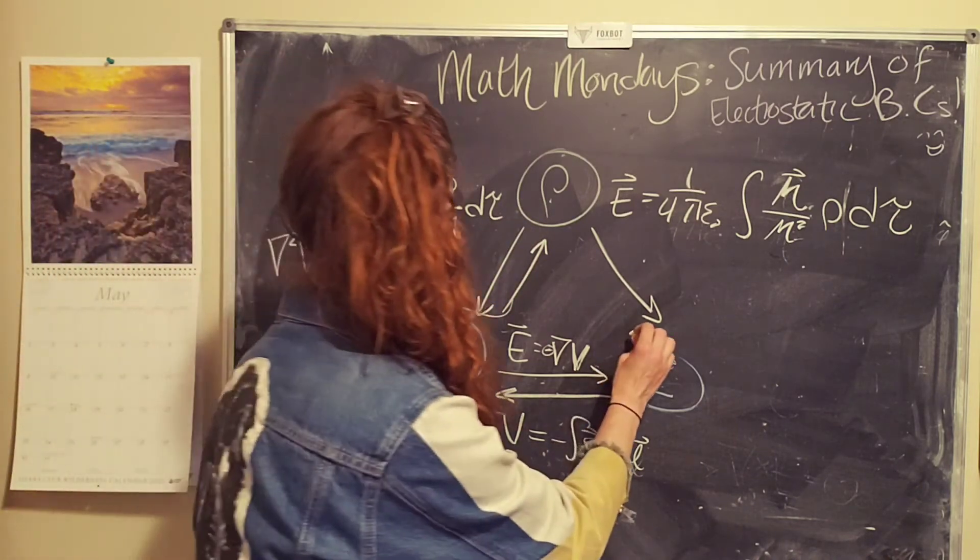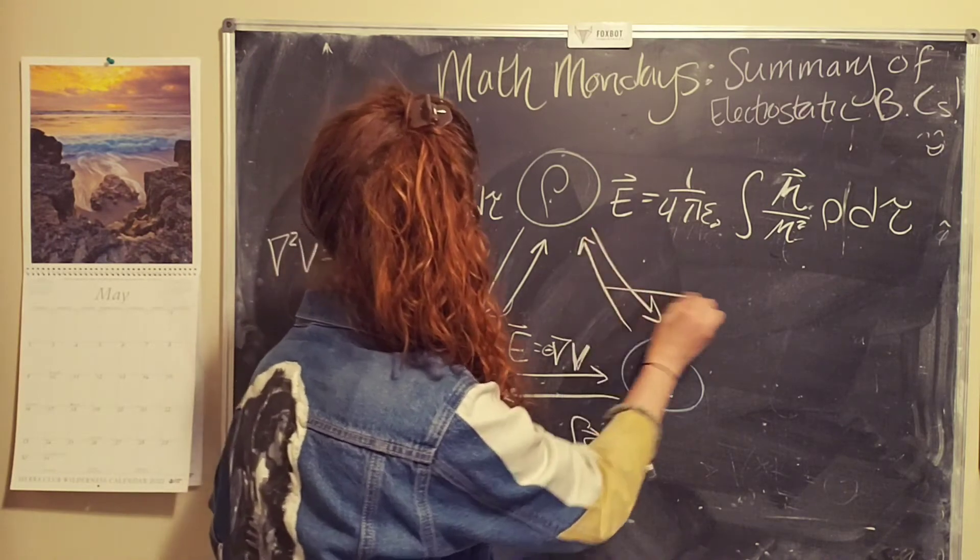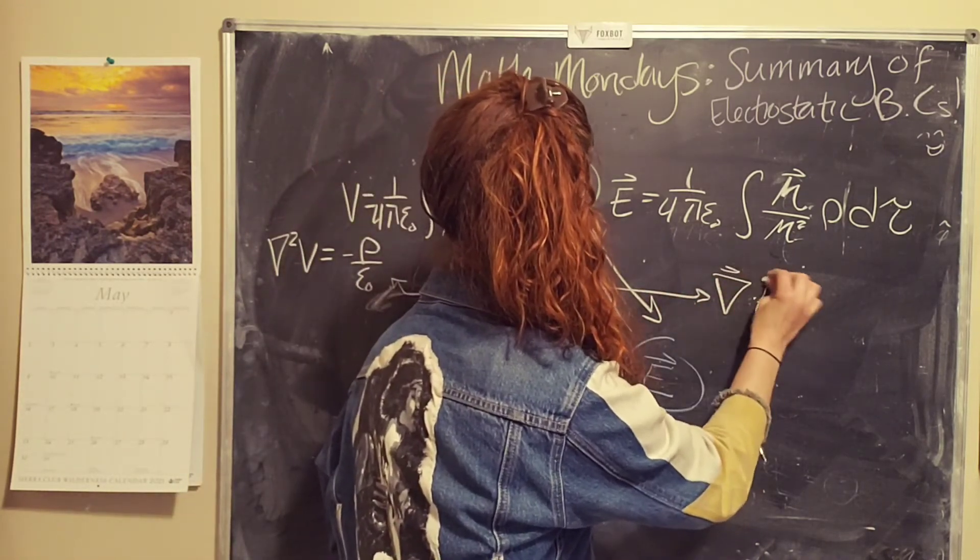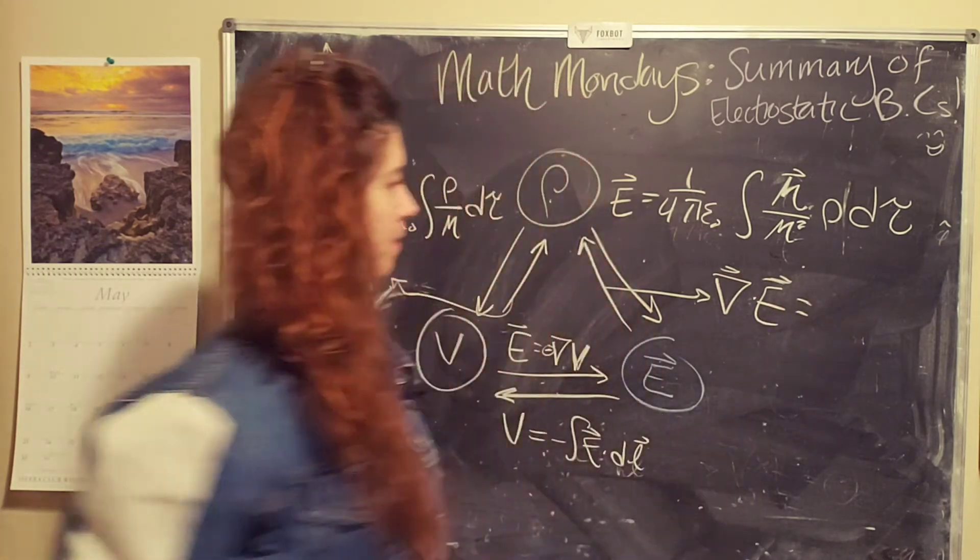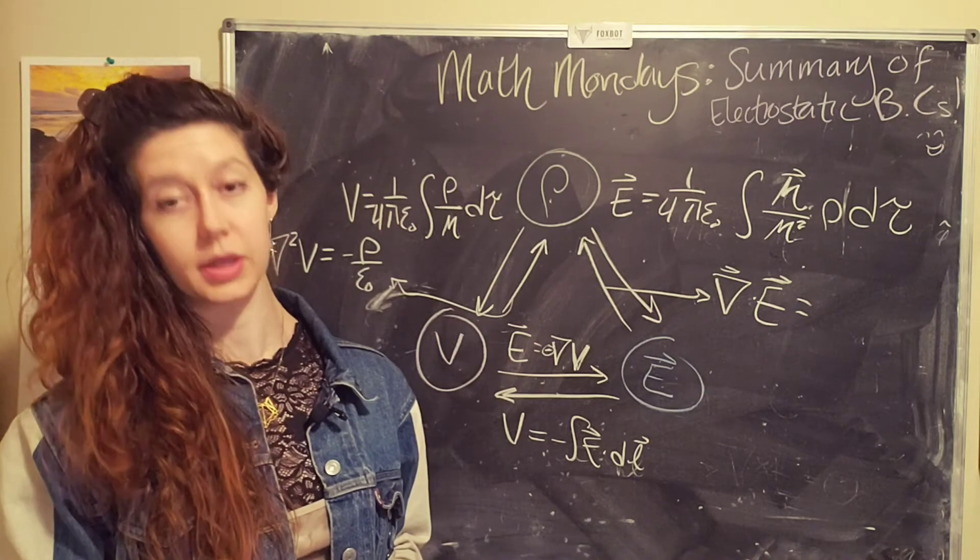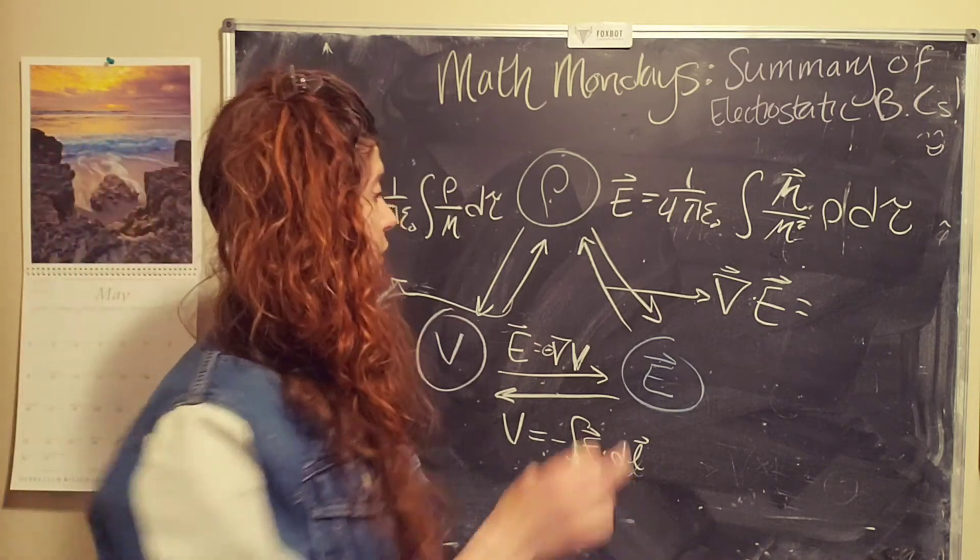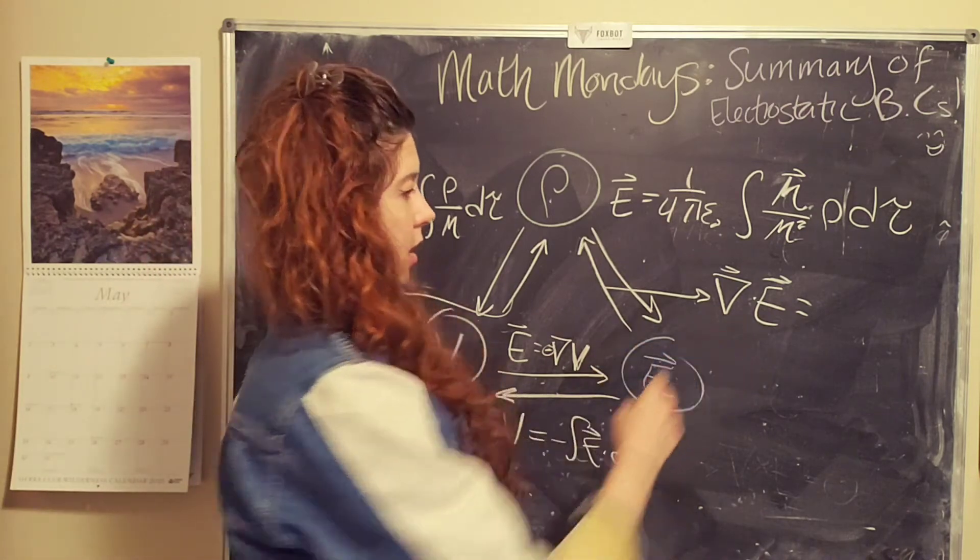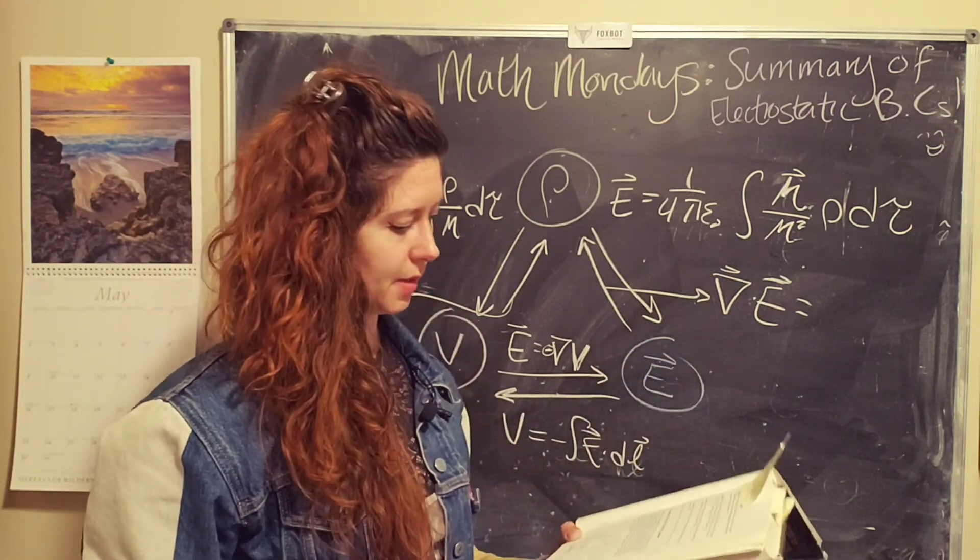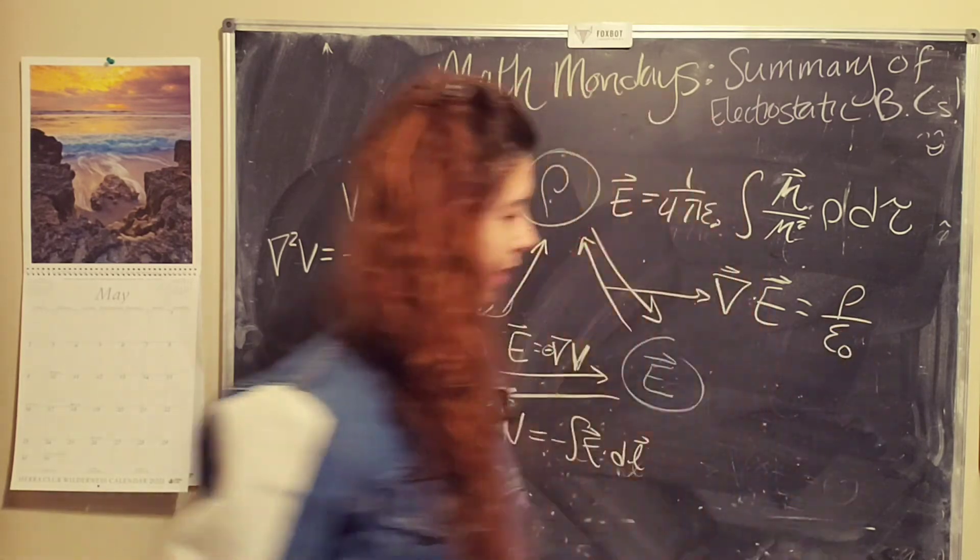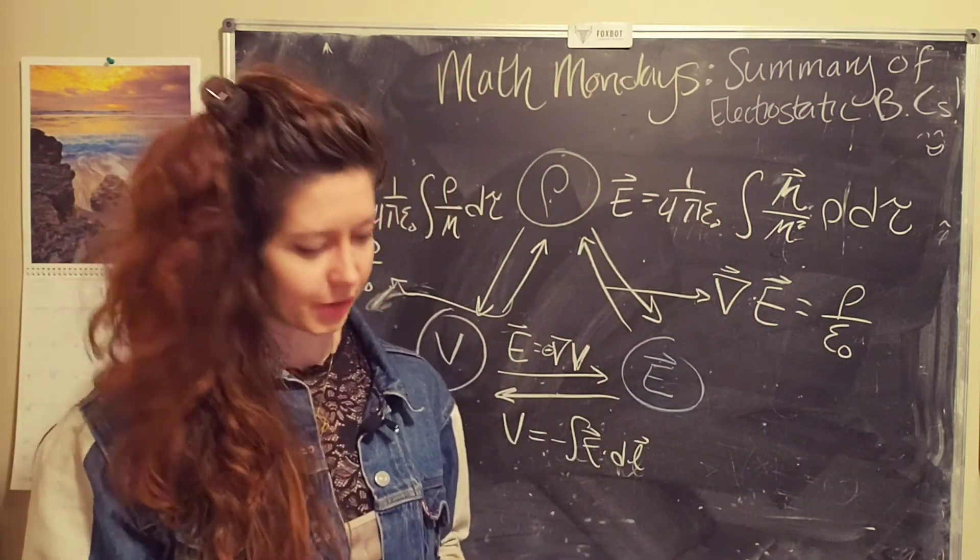And last but not least, you're like, wait, where is Gauss's law? Good question. So Gauss's law allows us to get the charge distribution from the electric field. Or when you have cases of symmetry, you can exploit the symmetry to more easily calculate the electric field without knowing the electric field.